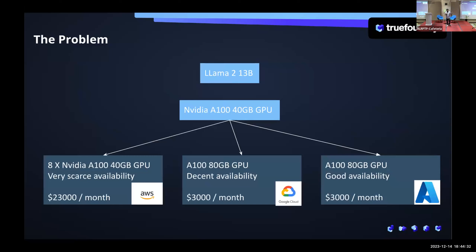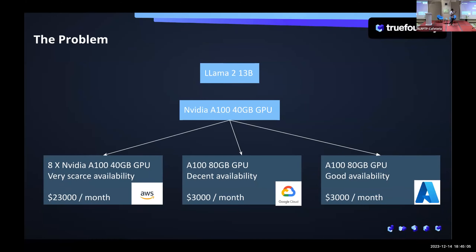Here's a common use case: I want to deploy LLAMA 2 13B. Why deploy your own instead of using ChatGPT? There can be multiple reasons. Number one, in sectors like FinTech and HealthTech, you cannot send any data out of your own cloud — so you'll need an open source model. The second reason is cost. LLAMA 2 13B might be much cheaper than using ChatGPT for your use case. Once you decide on LLAMA 2 13B, the minimum GPU you need is an NVIDIA A100 40GB GPU, which gives decent latency performance for LLAMA 2 13B.